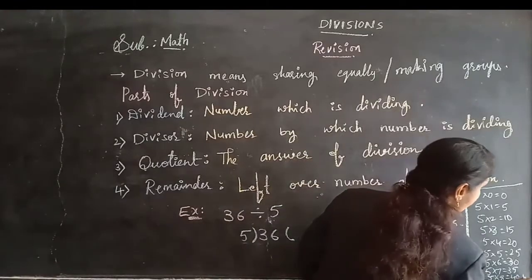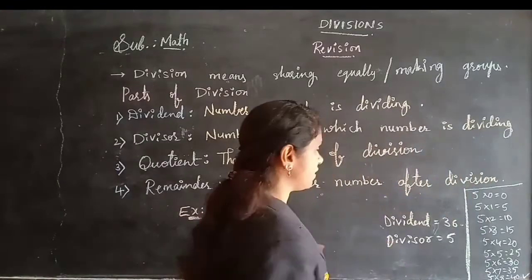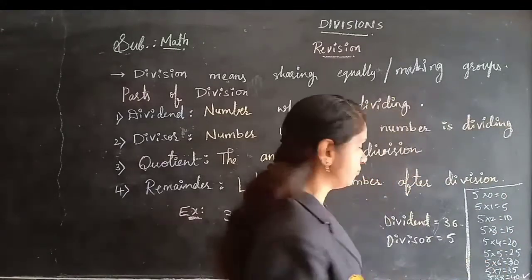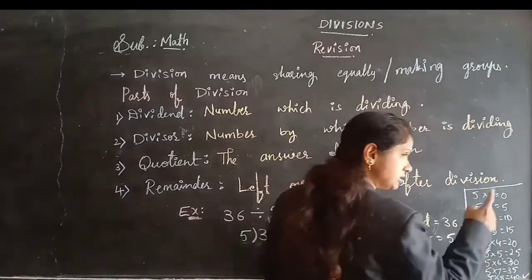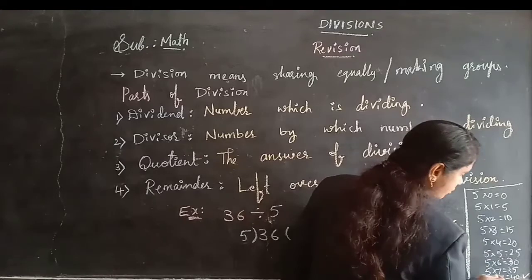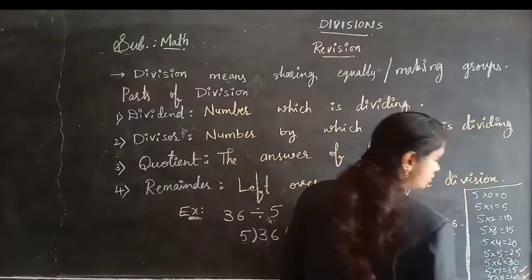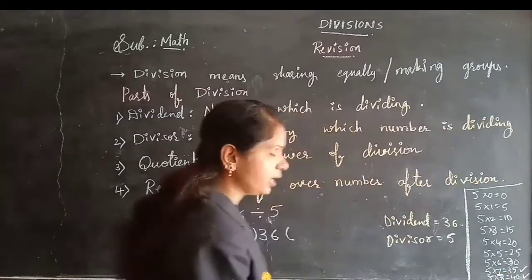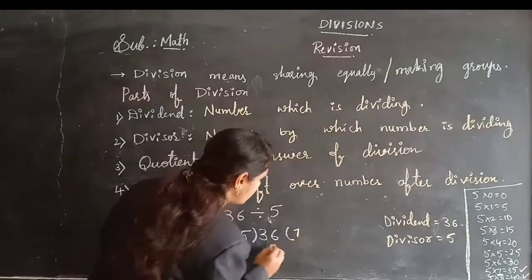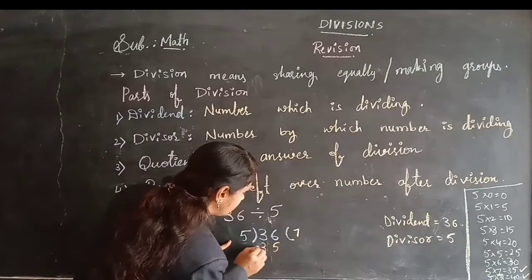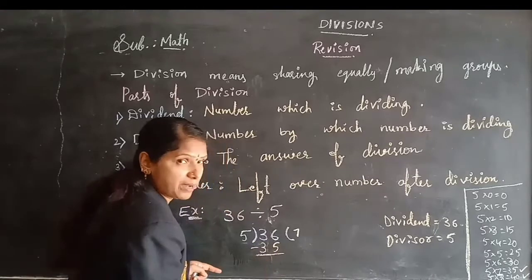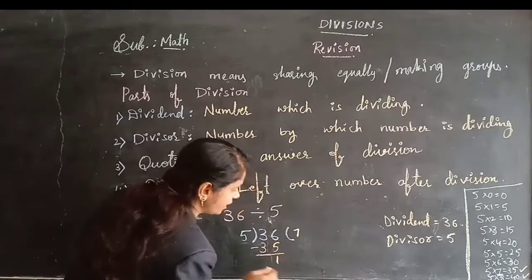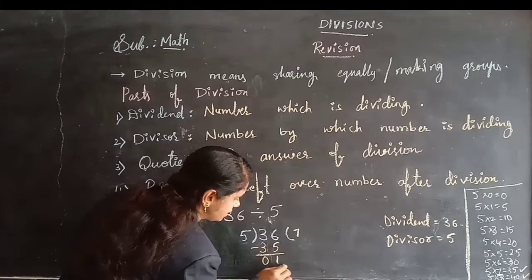We can't subtract 40 from 36 because it is bigger. We need to take the one before the bigger — so search the bigger and write the one before it. The one before 40 is 35, which is 5×7. So 5×7=35. Now: 6 minus 5 = 1, and 3 minus 3 = 0.